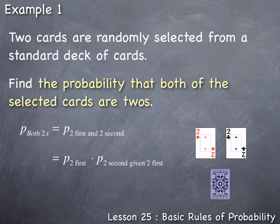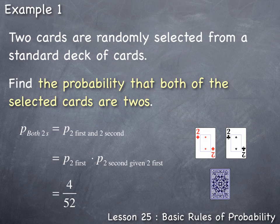The probability that a two is selected the first time is calculated by counting the total number of cards in the deck, which is 52, and the total number of twos in the deck, which is four. So the probability of selecting a two the first time is 4 out of 52. We then multiply that by the probability of selecting a two the second time, given we selected a two the first time.